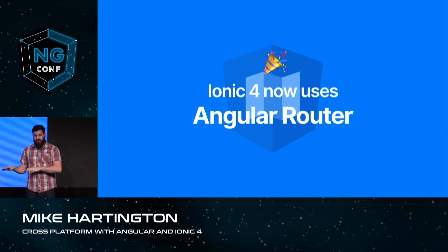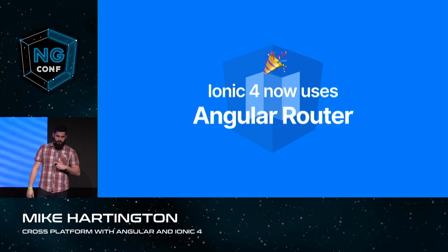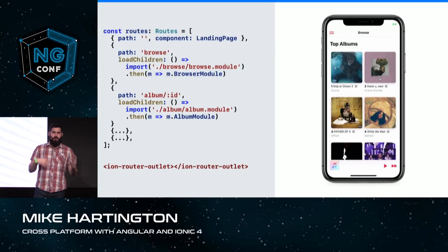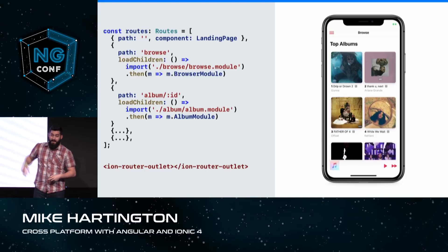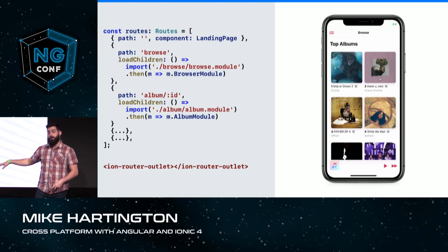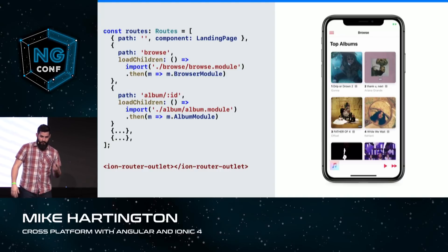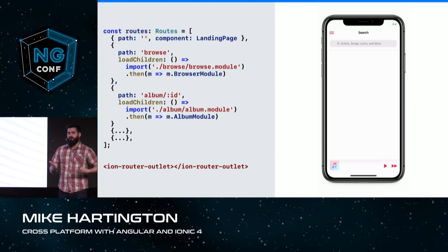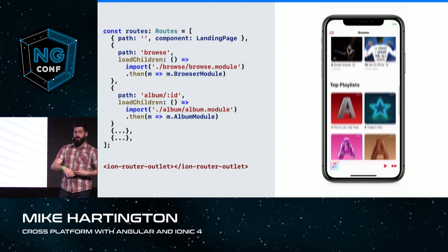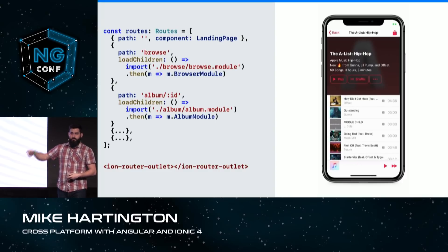So for 4.0, we moved to the Angular router, and we actually built on top of the router to provide all the animations and gestures — everything you would expect from a mobile app. Here on the left we have a typical router setup: a path and a component inline, and some other routes with lazy loaded children using dynamic imports. The only thing different is towards the bottom we have the ion-router-outlet component, which extends the built-in router outlet and gives us gestures, animations, and transitions built into our routes for free.